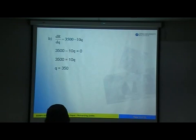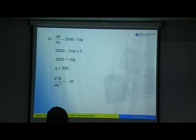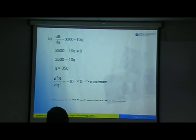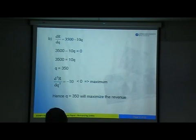We must prove that Q equals 350 maximizes the revenue. Step two: find d²R/dQ². Differentiate 3,500 minus 10Q one more time to get negative 10. Since negative 10 is less than 0, this confirms a maximum. Therefore Q equals 350 will maximize the revenue.